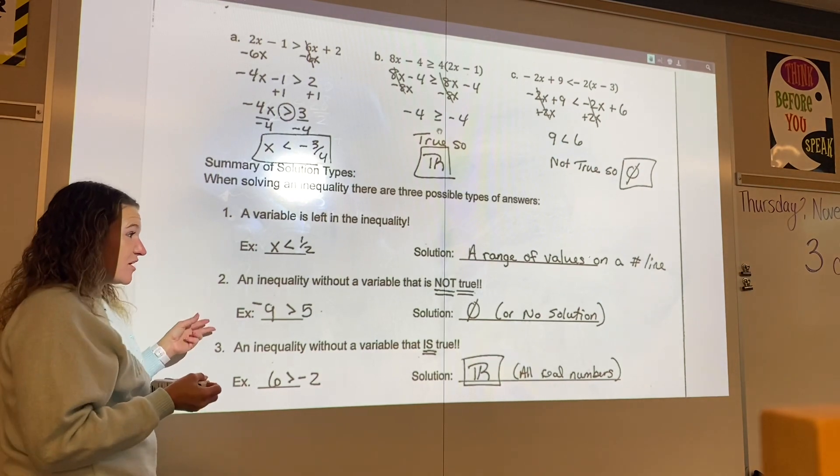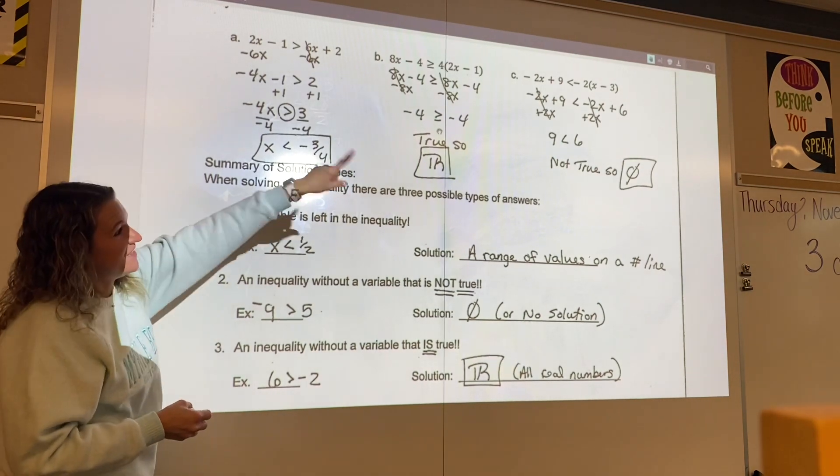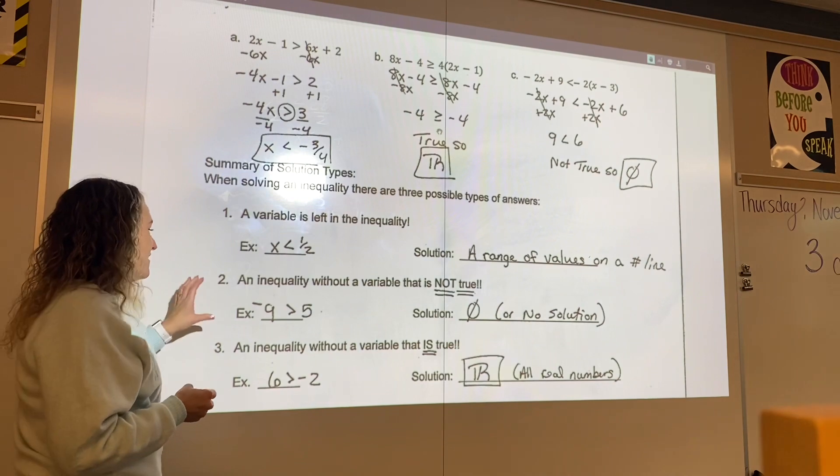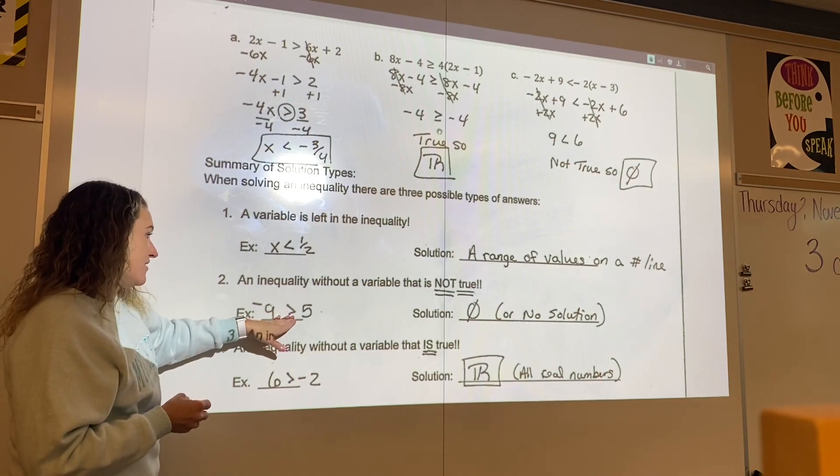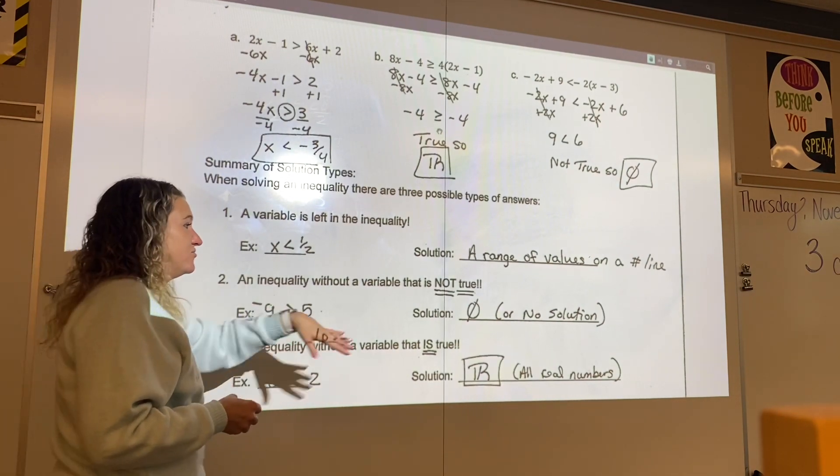An inequality without a variable that is not true. That was the last example we did. Such as negative 9 is greater than 5. That is not true. No solution.